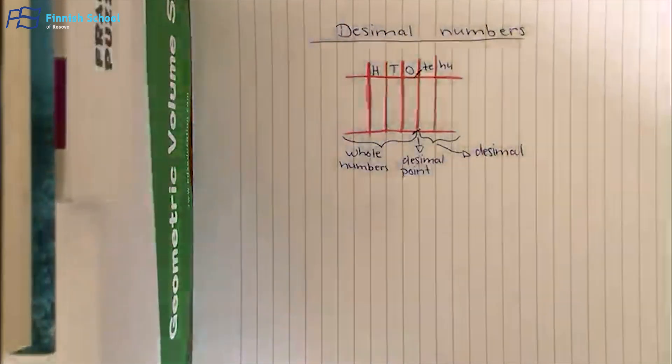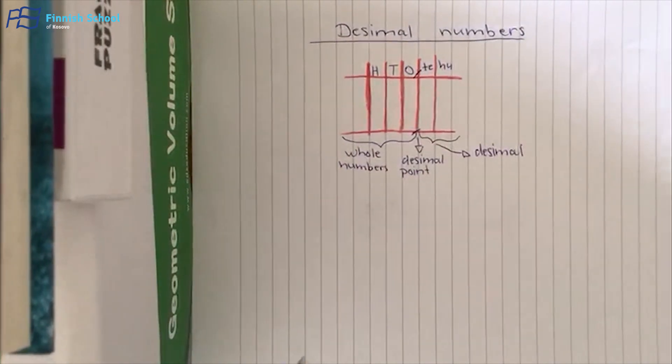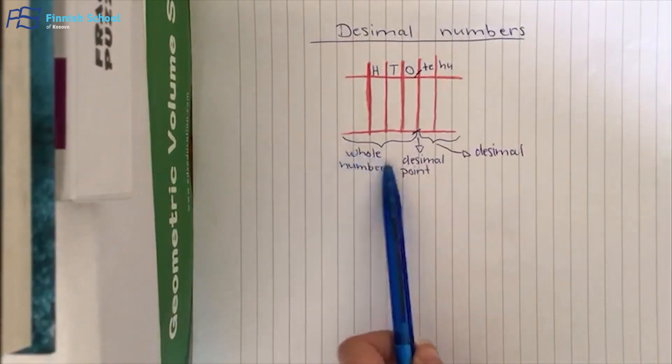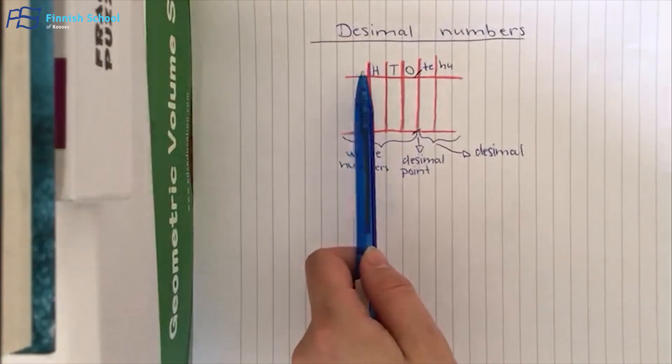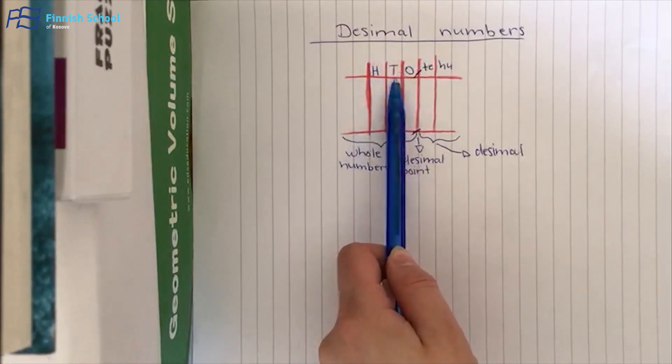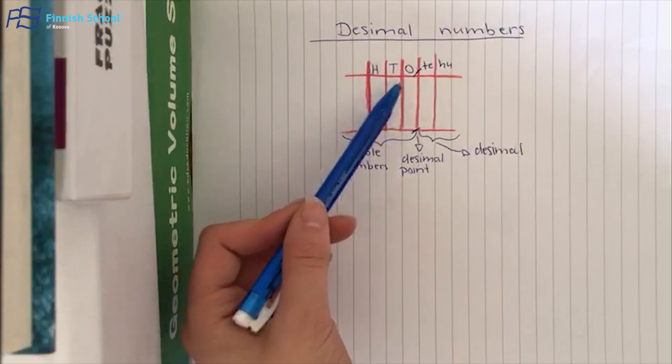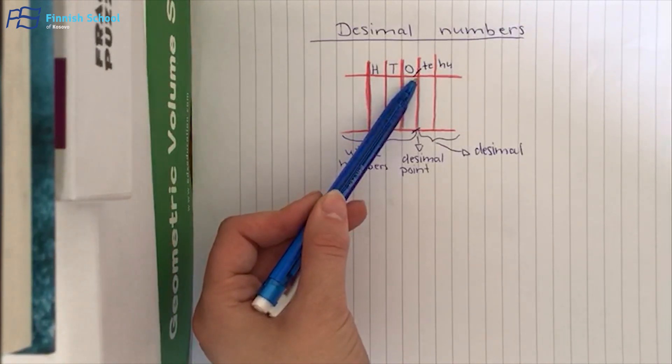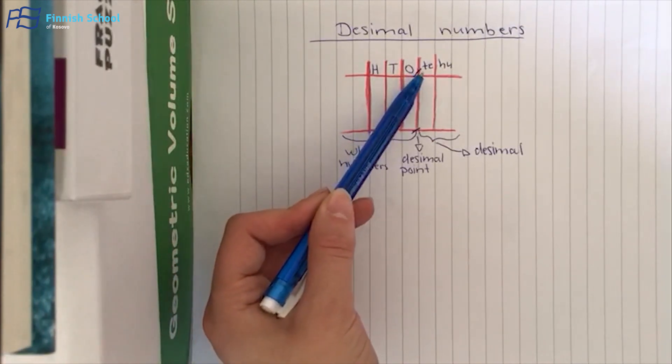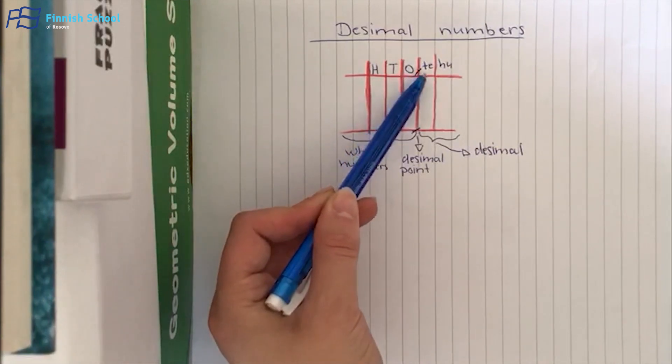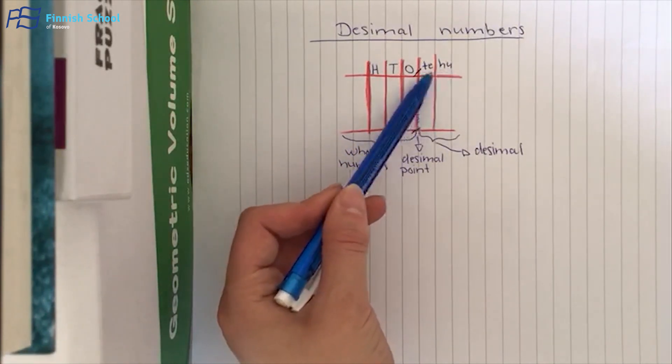Today you're learning about decimal numbers. In decimal numbers we have whole numbers, which are at the moment hundreds, tens, and ones. Then we have the decimal point, and after the decimal point comes the decimal parts.